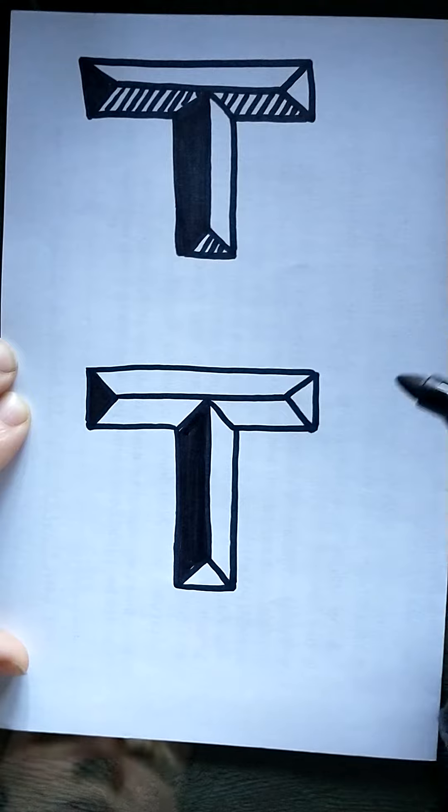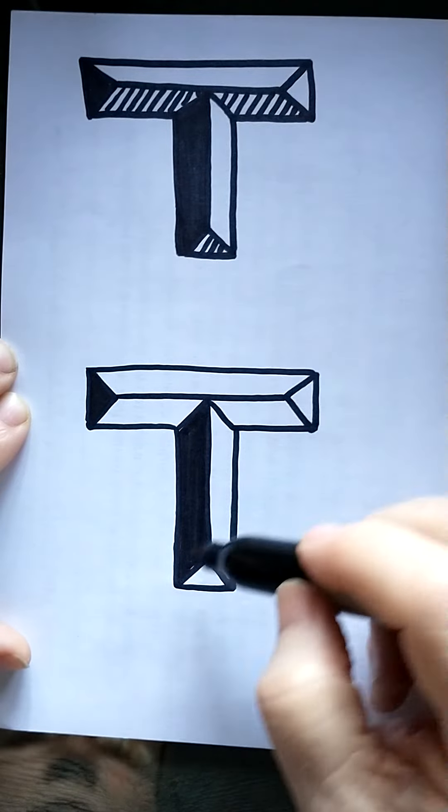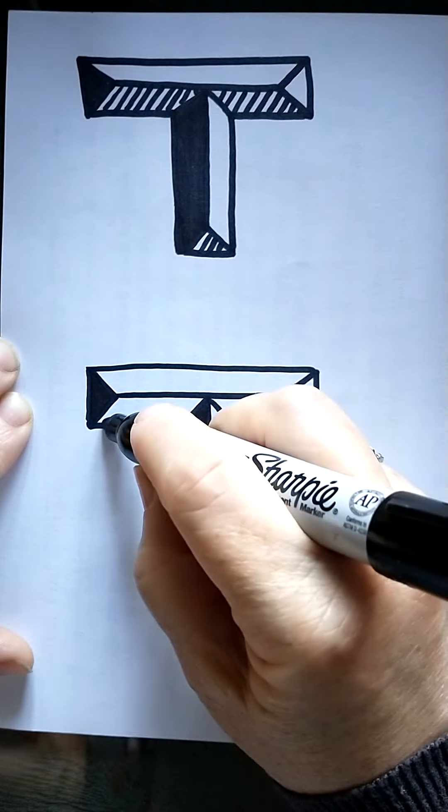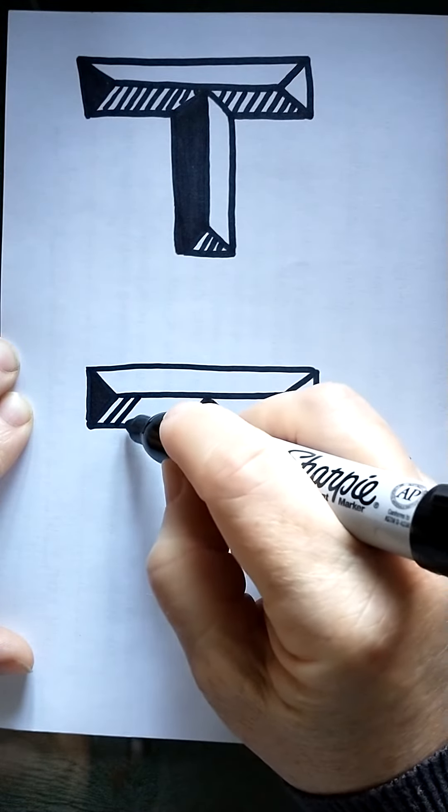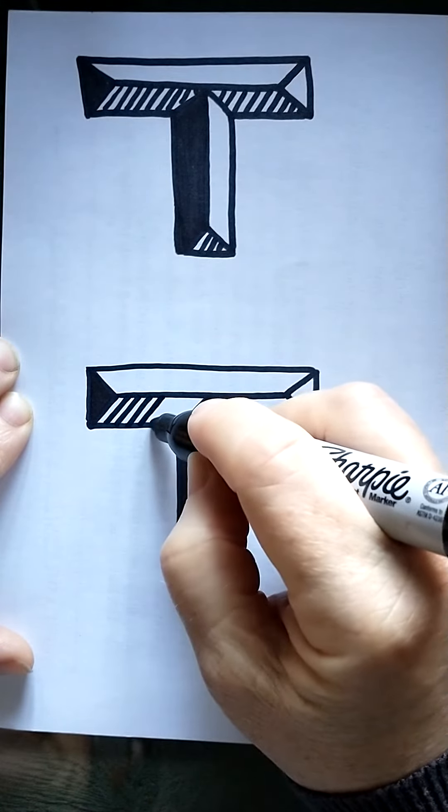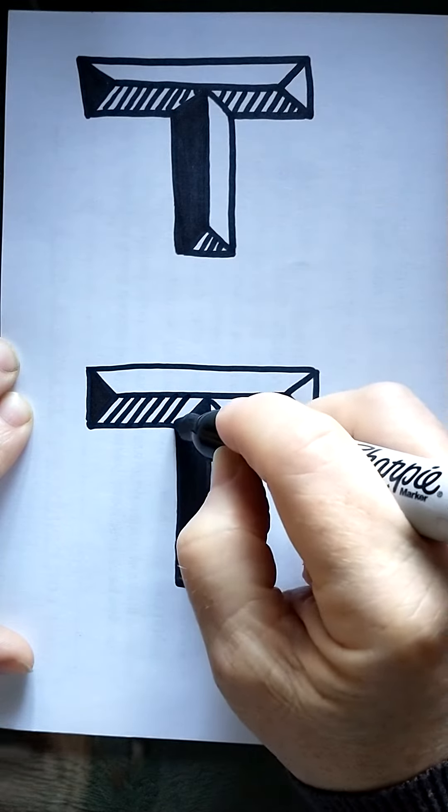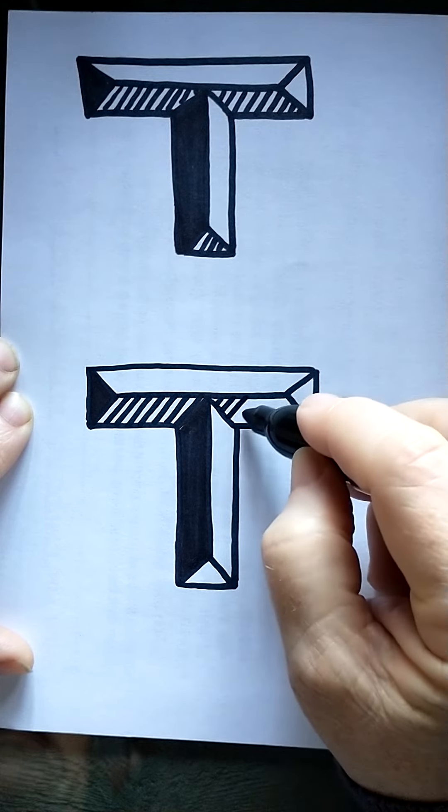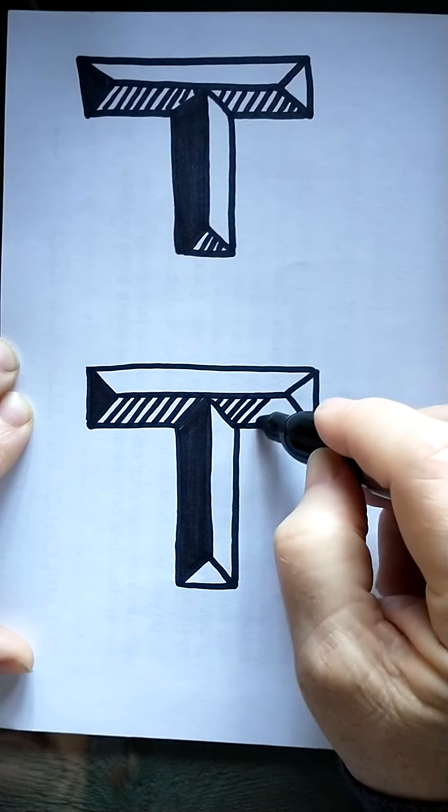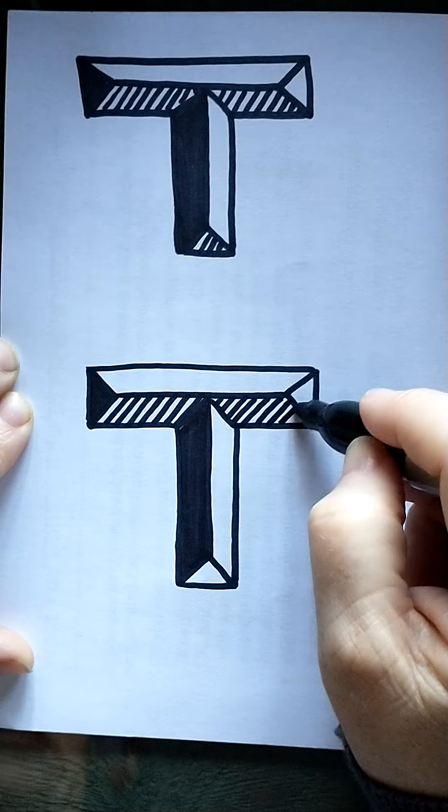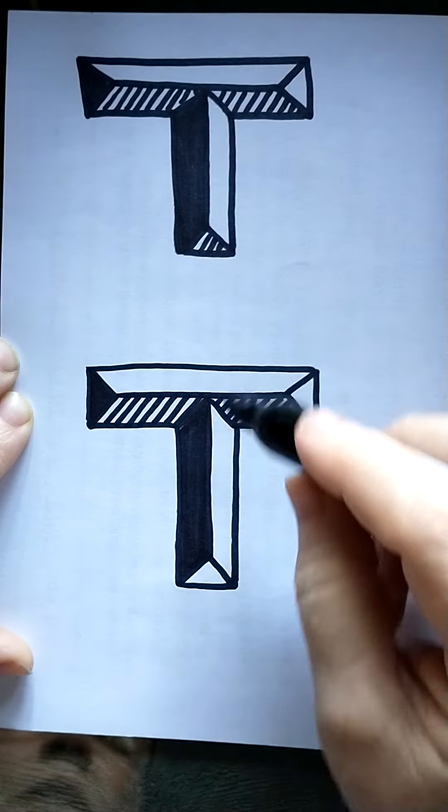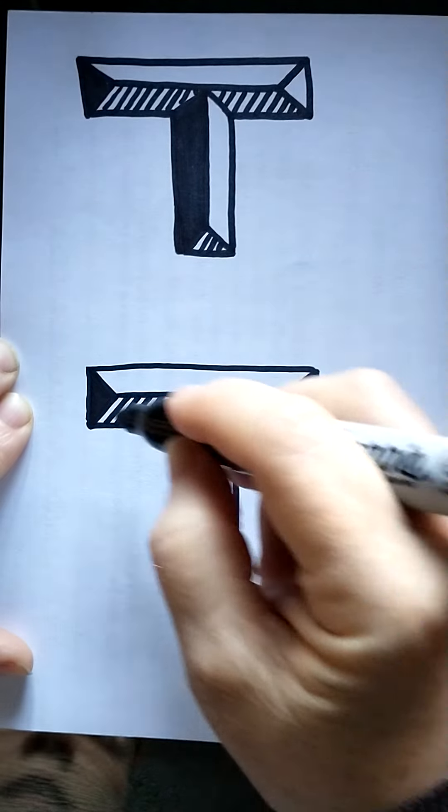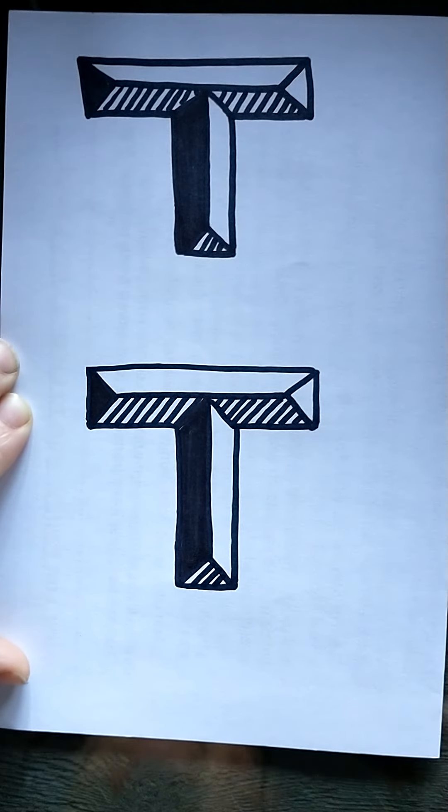I'm gonna use hatch marks to make kind of a 50% dark. So I'll put some lines. I'll give it the effect of being gray. So it'll look dark, but maybe not as dark as that left-hand face of the T.